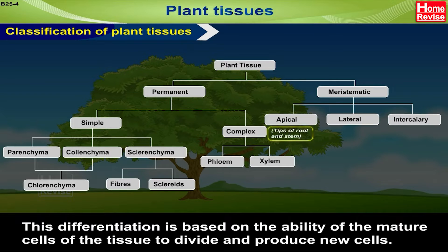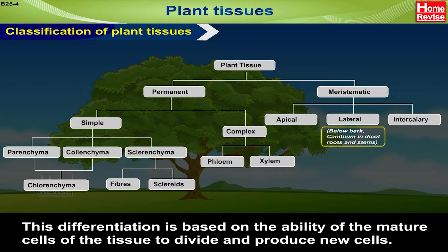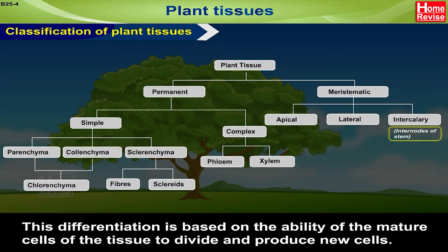Apical tissues are present at the tips of root and stem. Lateral tissues are present below the bark and in cambium cells of dicot roots and stems. Intercalary tissues are present in the internodes of the stem.